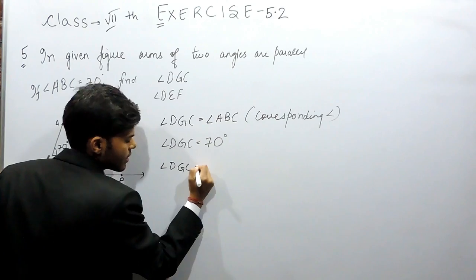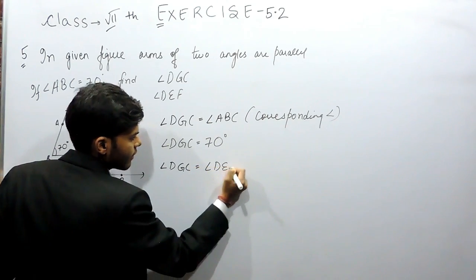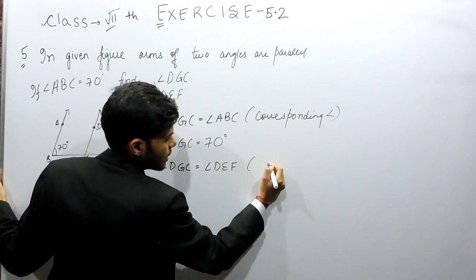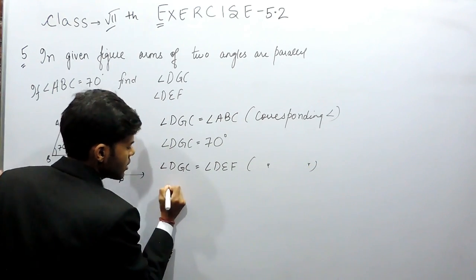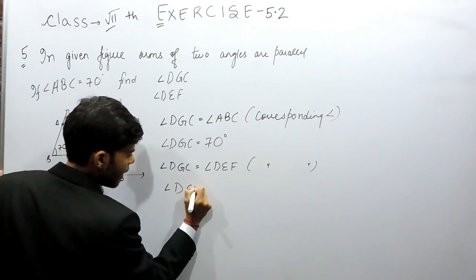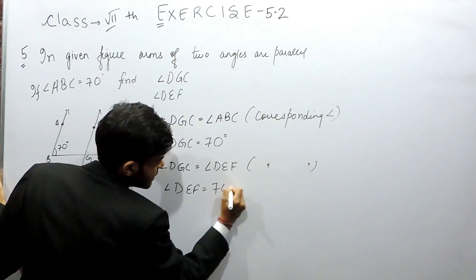So angle DGC is equal to angle DEF. Same reason, that is corresponding angles. So angle DEF is also equal to 70 degrees.